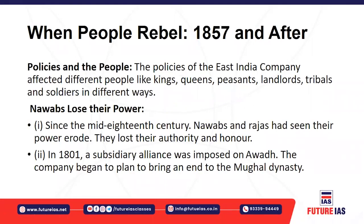In our last class we covered the different types of land settlement systems — the Permanent Settlement system, the Ryotwari settlement system, the Mahalwari settlement system — and also the Doctrine of Lapse and subsidiary alliances. We saw the different features through which the British basically tried to get control over Indians.